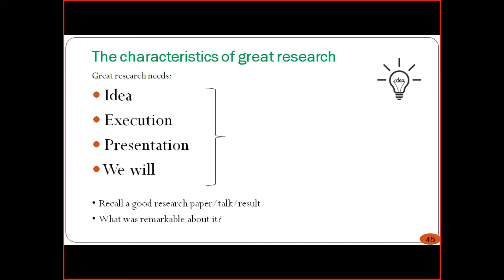The characteristics of great research: four important points are idea, execution, presentation, and people. Regarding the idea — we should have some problem in mind and try to find the solution to that particular problem. If we have such a type of idea, we try to find the ways to overcome and solve the particular problem. The third step is presentation; after trying, you get some results — maybe correct, maybe not — depending on the topic or area of research.